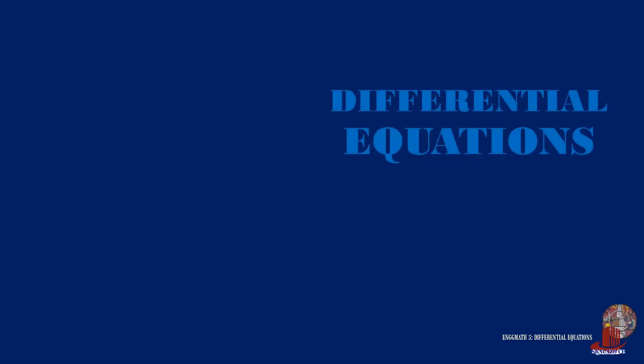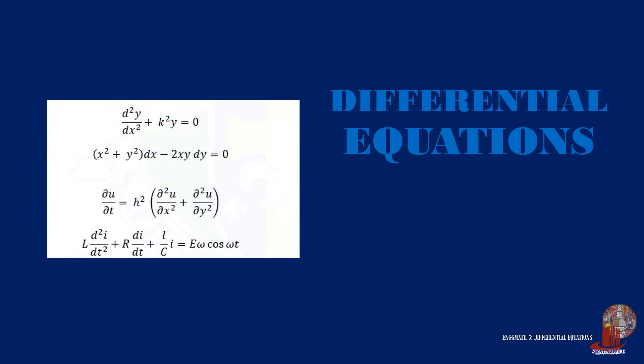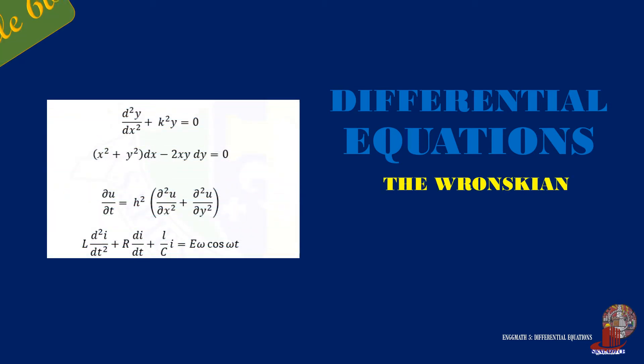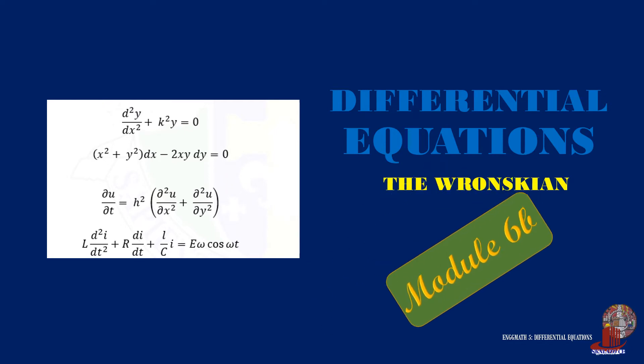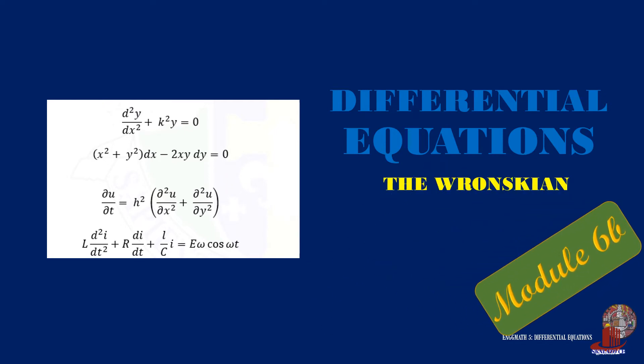The linear dependency of a few functions can easily be checked out, but it would be difficult for many functions. The Wronskian is an efficient method using a determinant to sort the linear independency of differential equations. Learn about it here in Engineering Math 5.